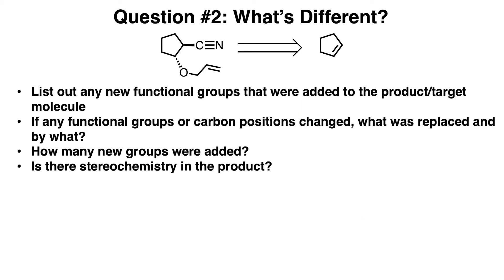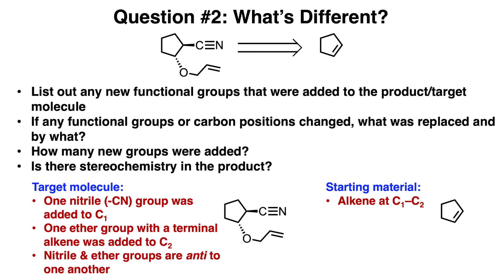The next question you'll ask yourself is: what's different about the starting material and the product? List out any new functional groups that were added to the target molecule. If any of the functional groups or carbon positions changed, what was replaced and by what? Take note of how many new groups were added, and also look for any stereochemistry in the product. Our starting material has an alkene at the C1-C2 positions, but our target molecule has one nitrile group added to the C1 position, as well as an ether group at the C2 position. Note that these two groups are anti to one another, since they are both on opposite bond types.